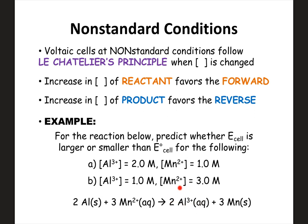Since we have a greater concentration of one of our products, Le Chatelier's principle says the reverse reaction is going to be favored — you're going to form the reactants. If the reverse reaction is favored, your cell potential is going to be smaller compared to the E naught under standard conditions.